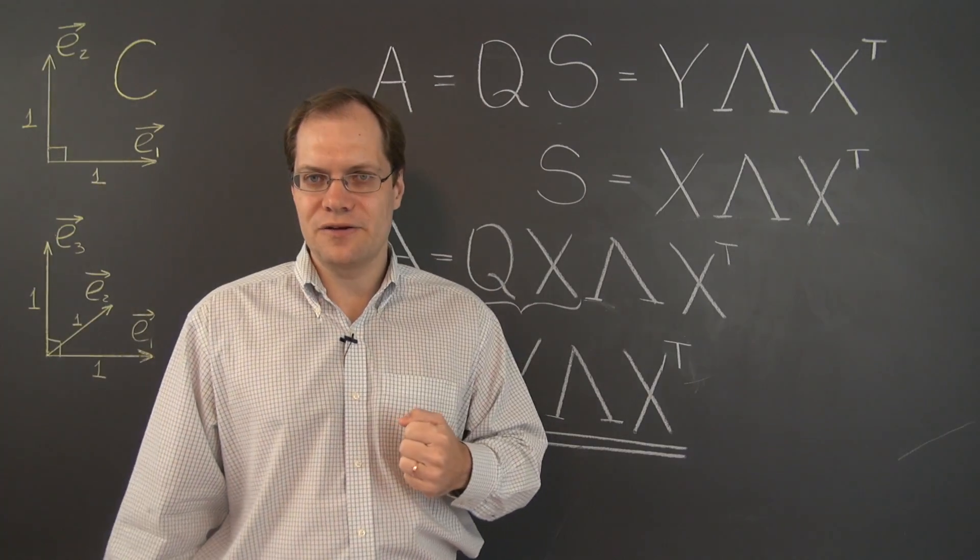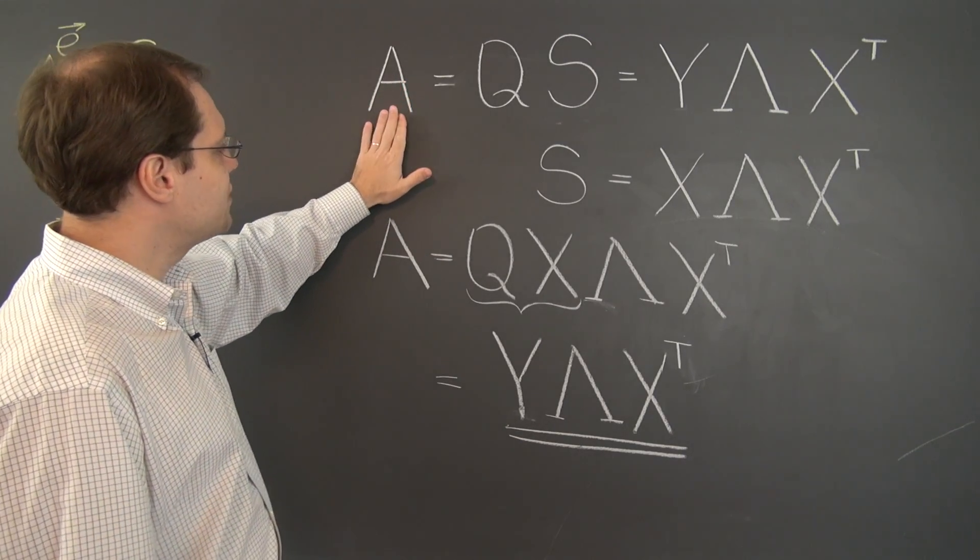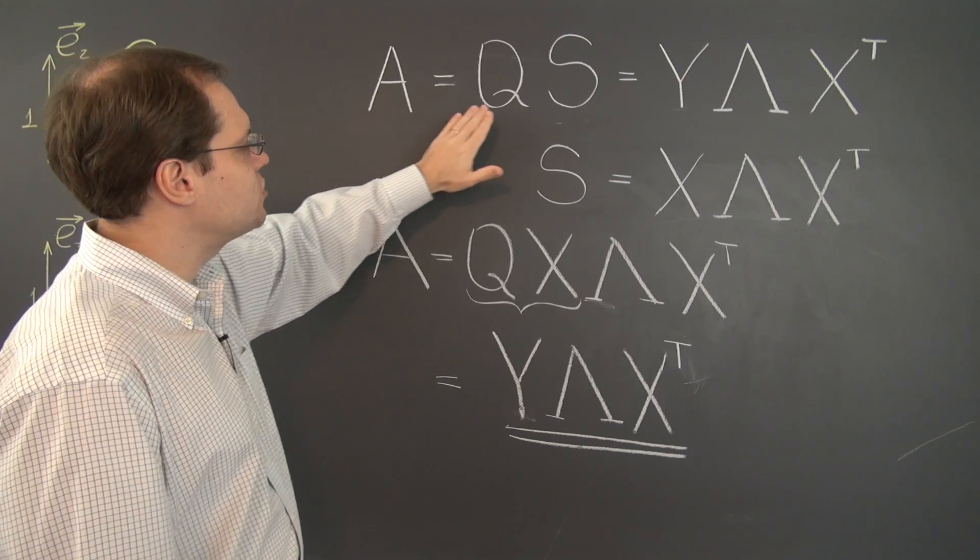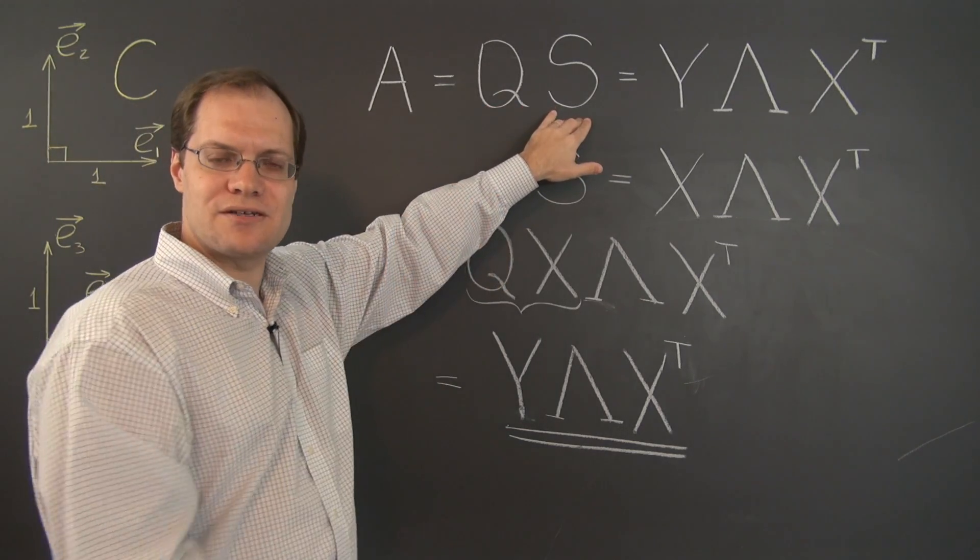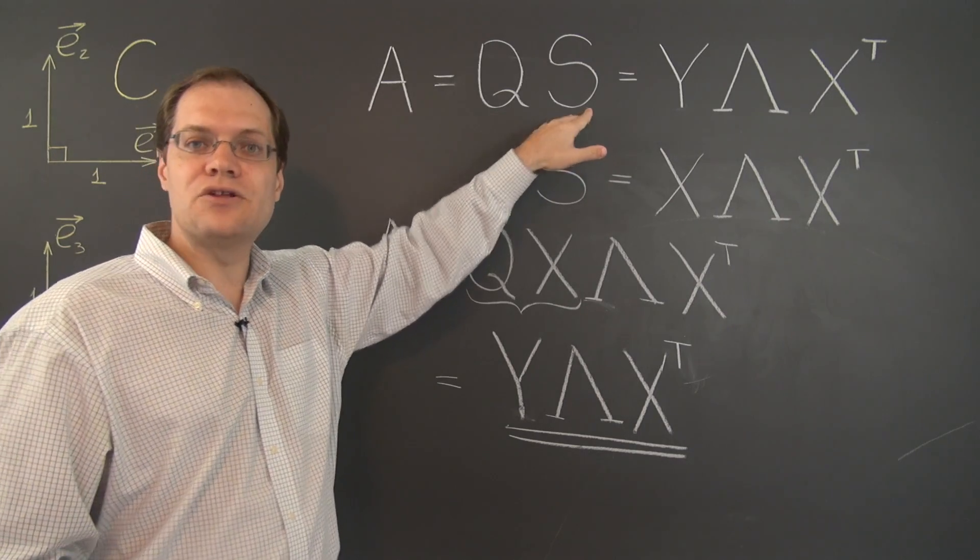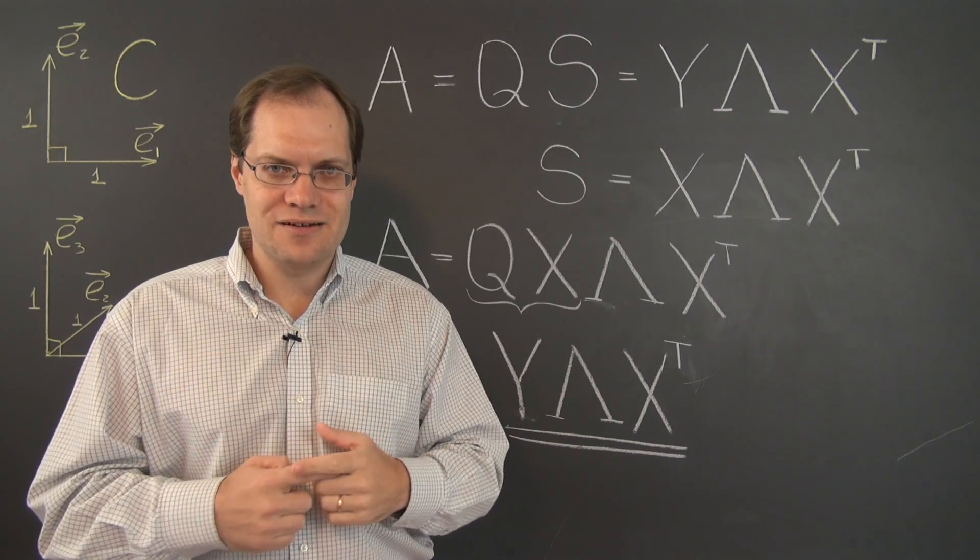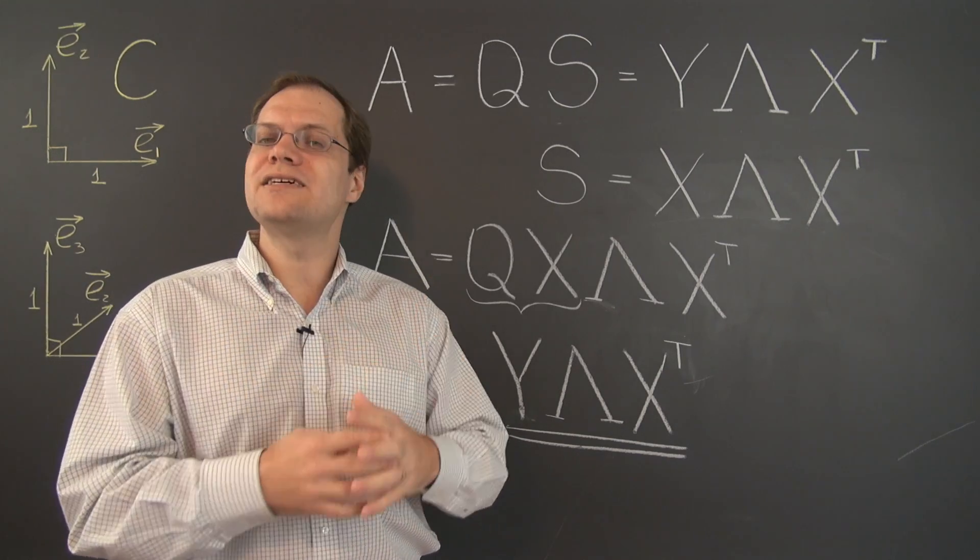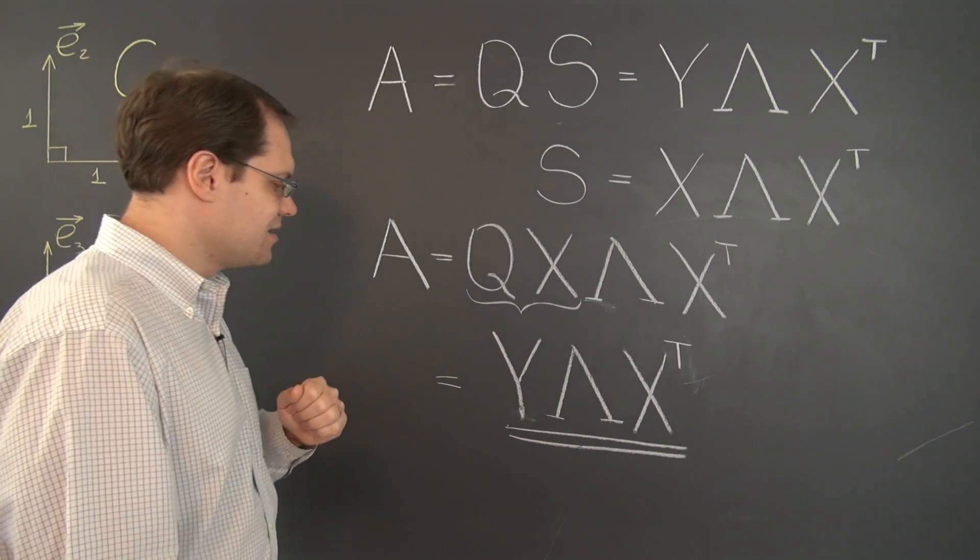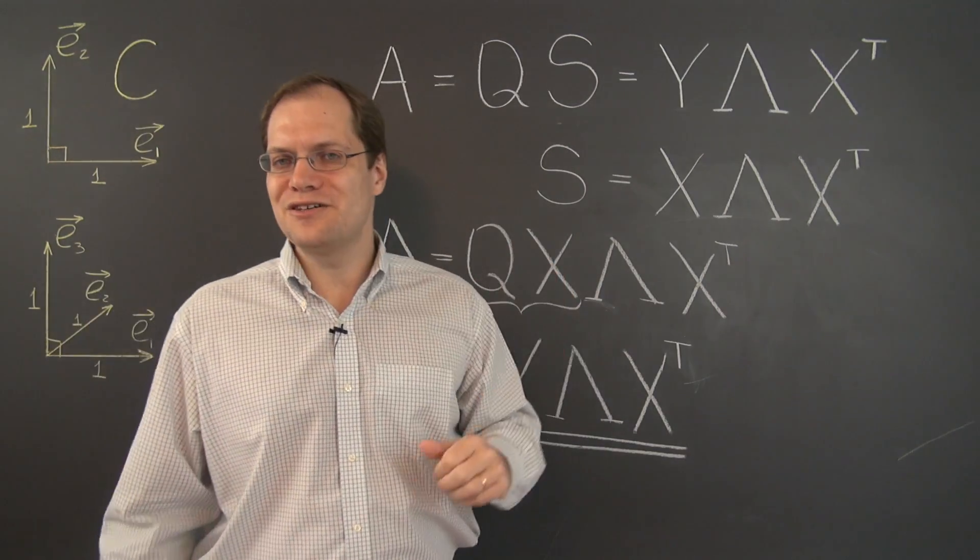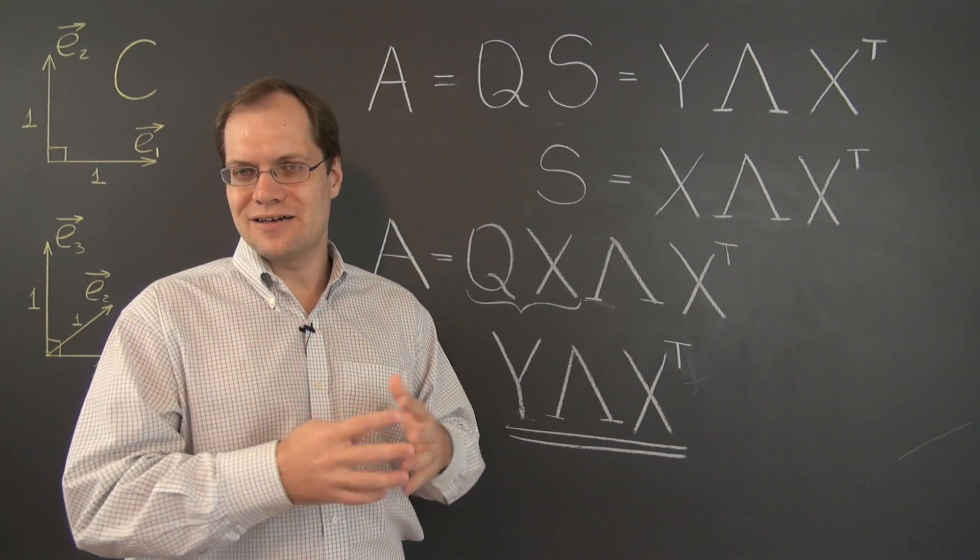In the next video, we'll use the singular value decomposition to prove that whether you decompose the matrix A into a combination QS or the combination in the opposite order SQ that the resulting orthogonal matrices are actually identical, which is what we saw in the one example that we've considered so far. So we'll do that and then we'll actually say goodbye to the singular value decomposition only to revisit it in depth later in the course.